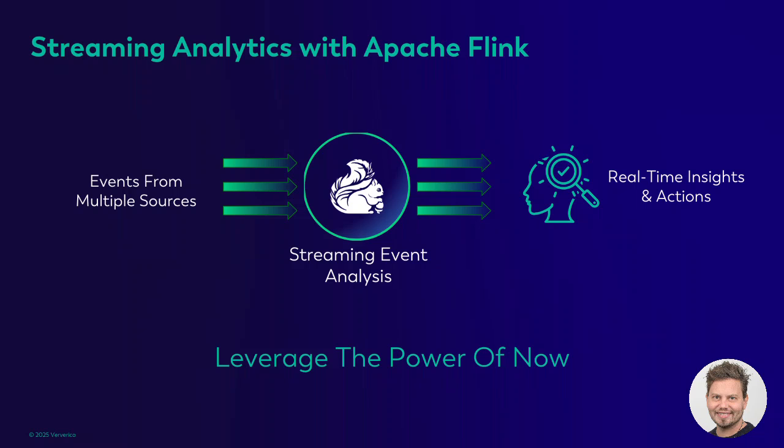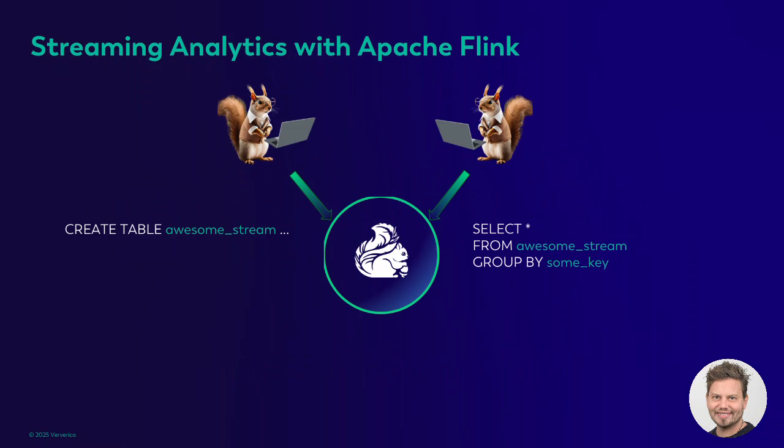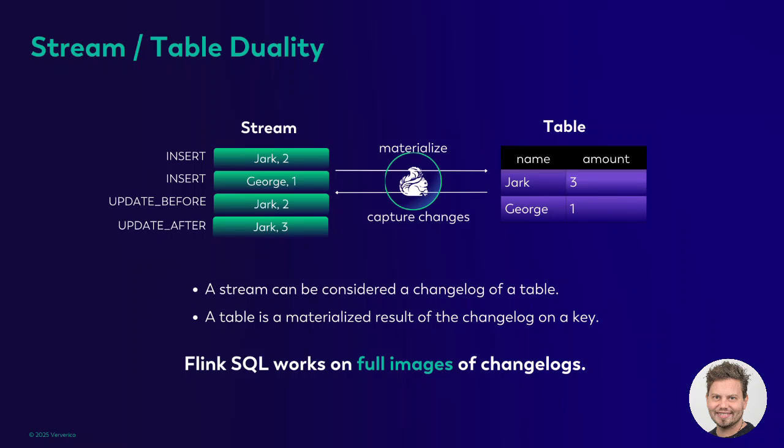Let's unpack this and better understand what all these things mean. Flink is the de facto standard for stream processing and real-time analysis. In its simplest form, it's about consolidating events from multiple sources, correlating and analyzing all those events to make sense of them and derive real-time insights and actions. Flink provides a variety of APIs that allow lots of flexibility, from the low-level DataStream API to the Flink SQL API. Because it's SQL, the way we interact with Flink feels like we are interacting with a database.